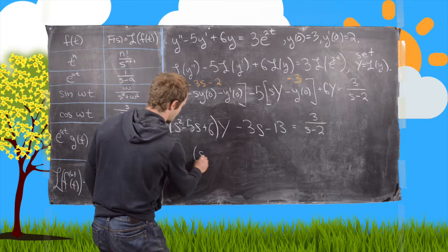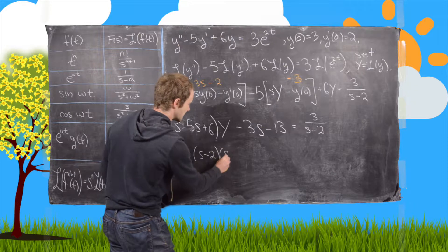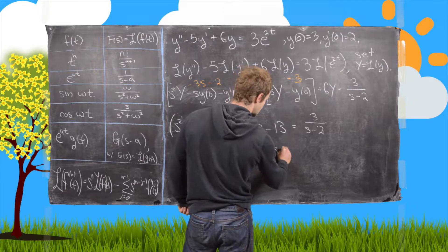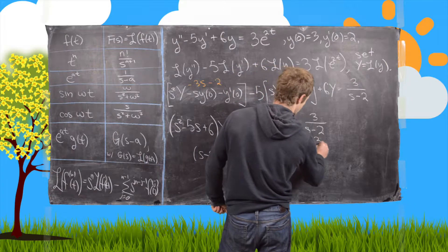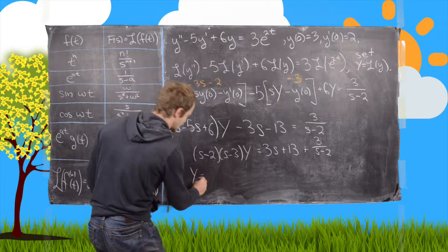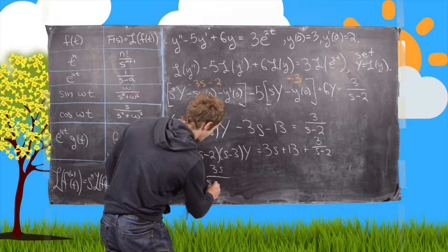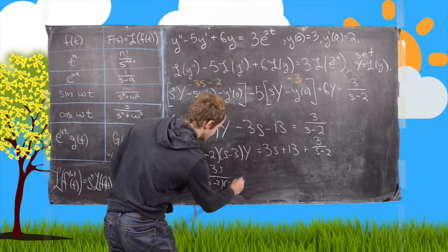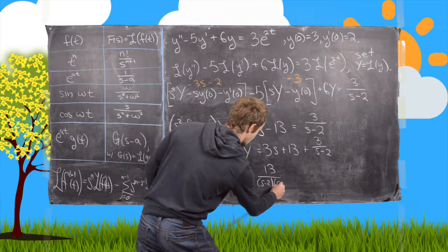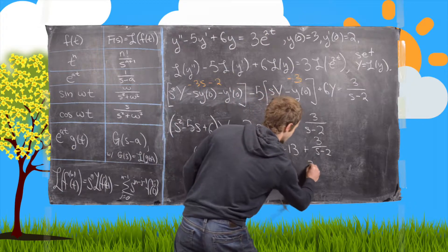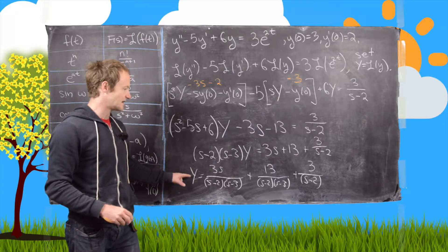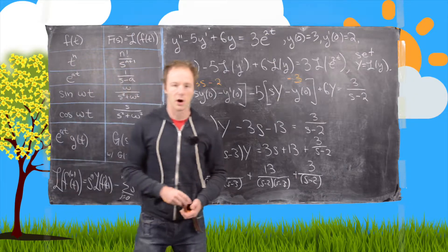We can factor the left-hand side: this is s minus 2 times s minus 3 times capital Y, equals 3s plus 13 plus 3 over s minus 2. That gives us capital Y equals 3s over (s minus 2)(s minus 3), plus 13 over (s minus 2)(s minus 3), plus 3 over (s minus 2)(s minus 3). I'll clean up the board and bring this up before continuing.